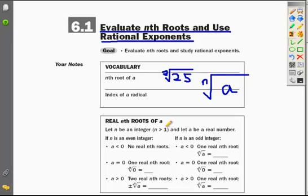The real nth roots of a: when a is less than 0 and n is an even integer, so the square root of a negative number, you're not going to get any real nth roots. It does not exist to have a real nth root, so we end up with no real nth roots.